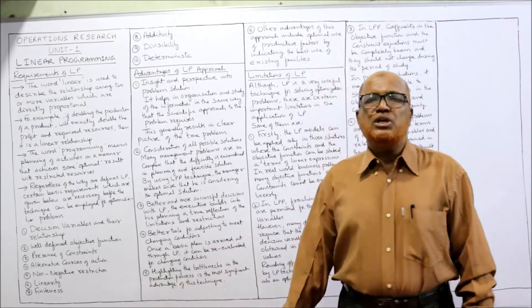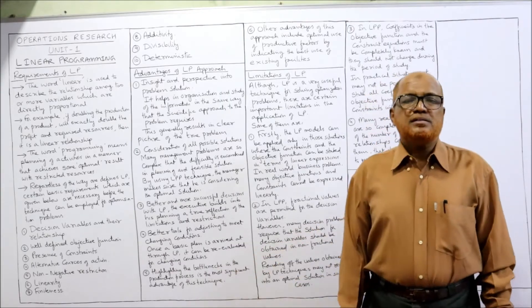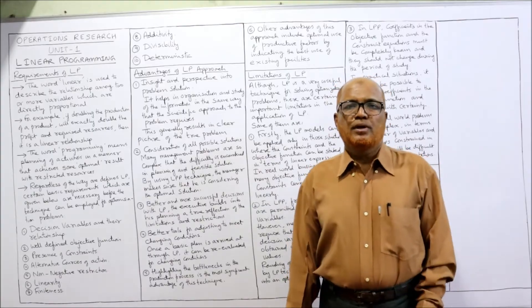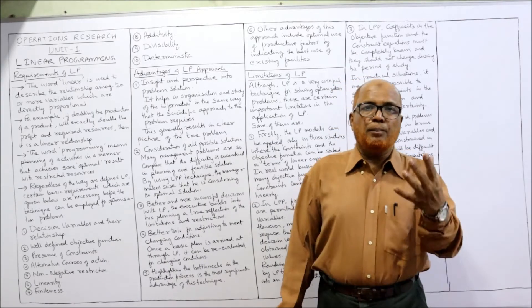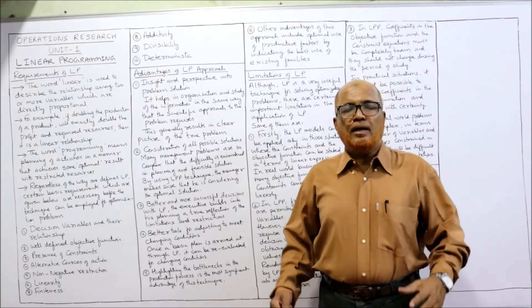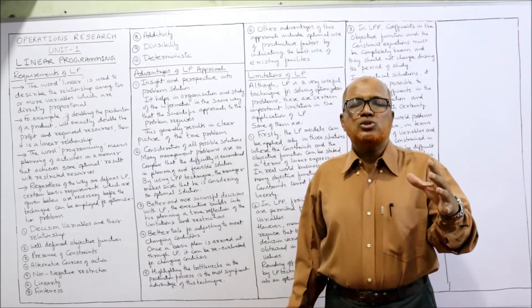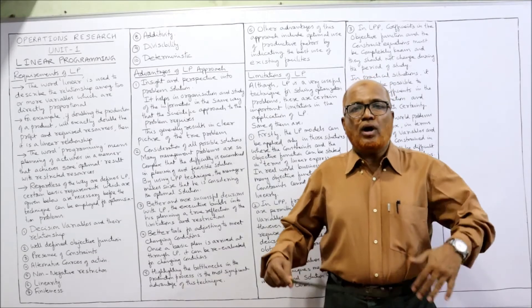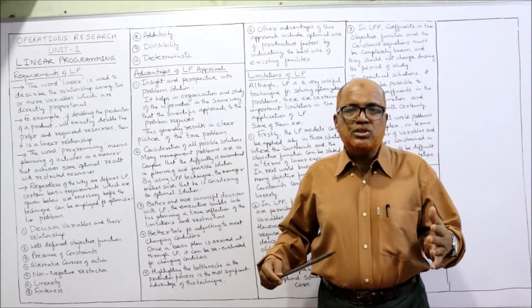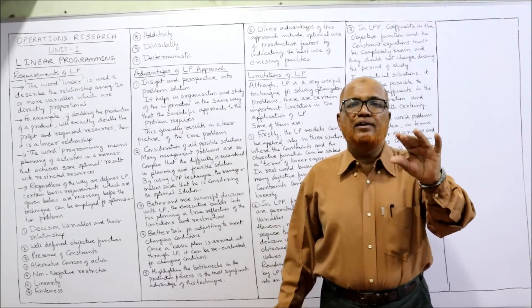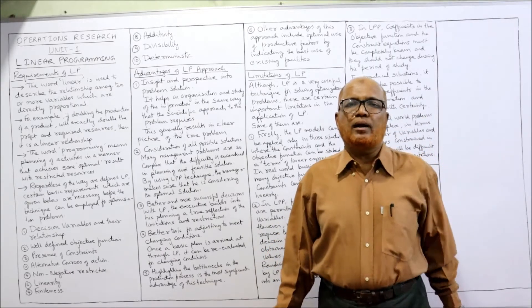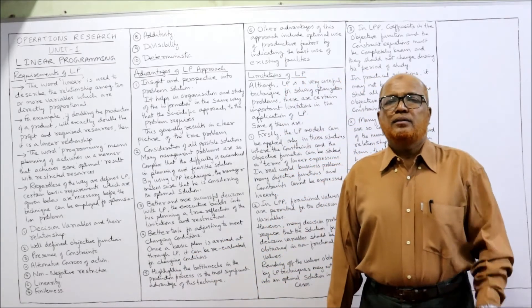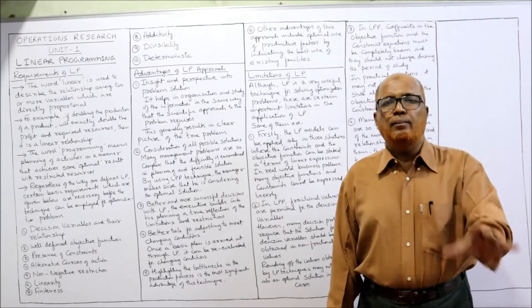These decision variables and their relationships must be present before we can apply linear programming. The second requirement is a well-defined objective function — there is no good solution for a bad problem. The management must clearly know what the objective is and what they want to achieve. The objective function should be clearly defined so that we can obtain a good solution.